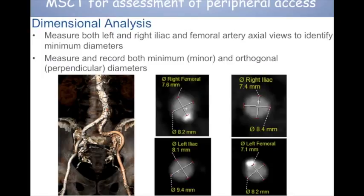What about the procedure itself? You do a baseline echo — in our case under general anesthetic we do TOE on the day, just a baseline assessment. Then we do the procedure. During the procedure, you keep an eye out for complications: pericardial effusions, LV dysfunction, worsening mitral valve regurgitation — it should get better but sometimes gets worse. At the end of the procedure, you assess systolic and diastolic valve function.